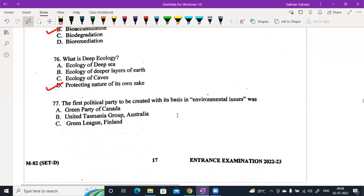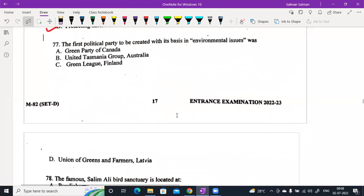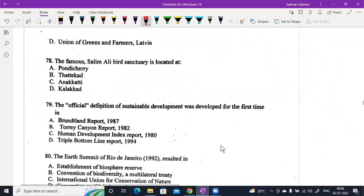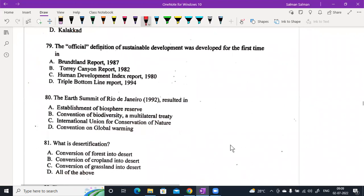The first political party to be created with its basis in environmental issues was United Tasmania Group Australia, option B. The famous Salim Ali bird sanctuary is located in Goa. The official definition of sustainable development was developed for the first time in Brundtland report 1987. The Earth's summit of Rio de Janeiro 1992 resulted in Convention on Biodiversity, a multilateral treaty, option B.